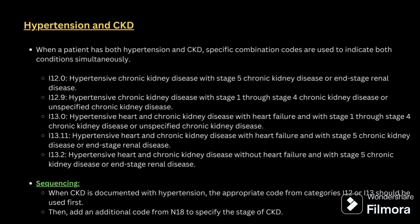For example, hypertension and CKD. When a patient is diagnosed with hypertension and CKD, we will be giving the combination code I12 — hypertension with CKD. Second, you will be coding for CKD with the stage. CKD will be assigned as a secondary code, and the combination code I12 will be assigned as the primary code.